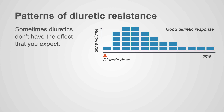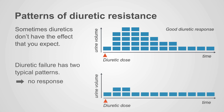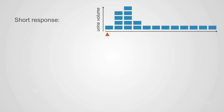Sometimes diuretics don't have the effect that you expect. Here's an example of a good diuretic response. Diuretic failure has two typical patterns. The first is you give the drug and get no response. The other is you give the drug and get a very short response, so you don't get enough diuresis over 24 hours. So there are two different responses for diuretic resistance.